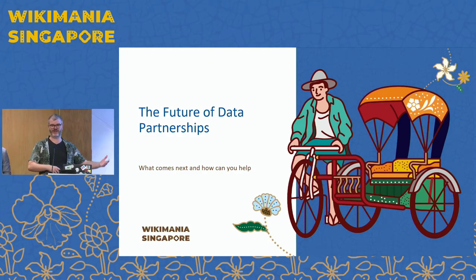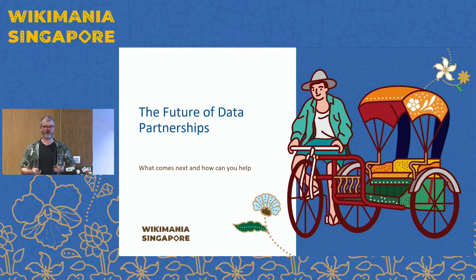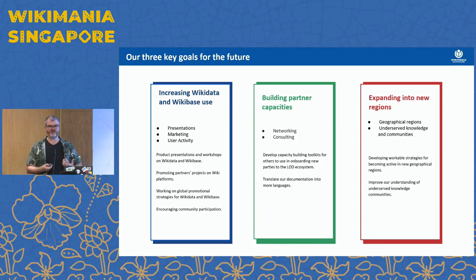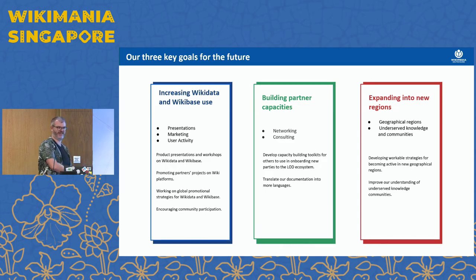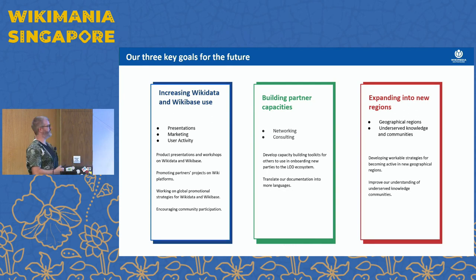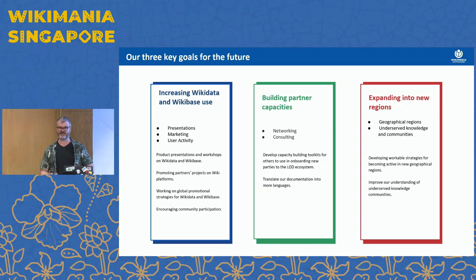Now that you're all up to speed on linked open data and who we are and what we do, I'd like to talk about what comes next and how you folk can actually help us get there. Our goals for the future include increasing Wikidata and Wikibase use — that's one of the reasons we're at events like this. Wikidata is well known, Wikibase very much less so, and it's beholden to us to get out there and let people know what's happening. We do our best to put together presentations like this, attend events, and encourage community participation.